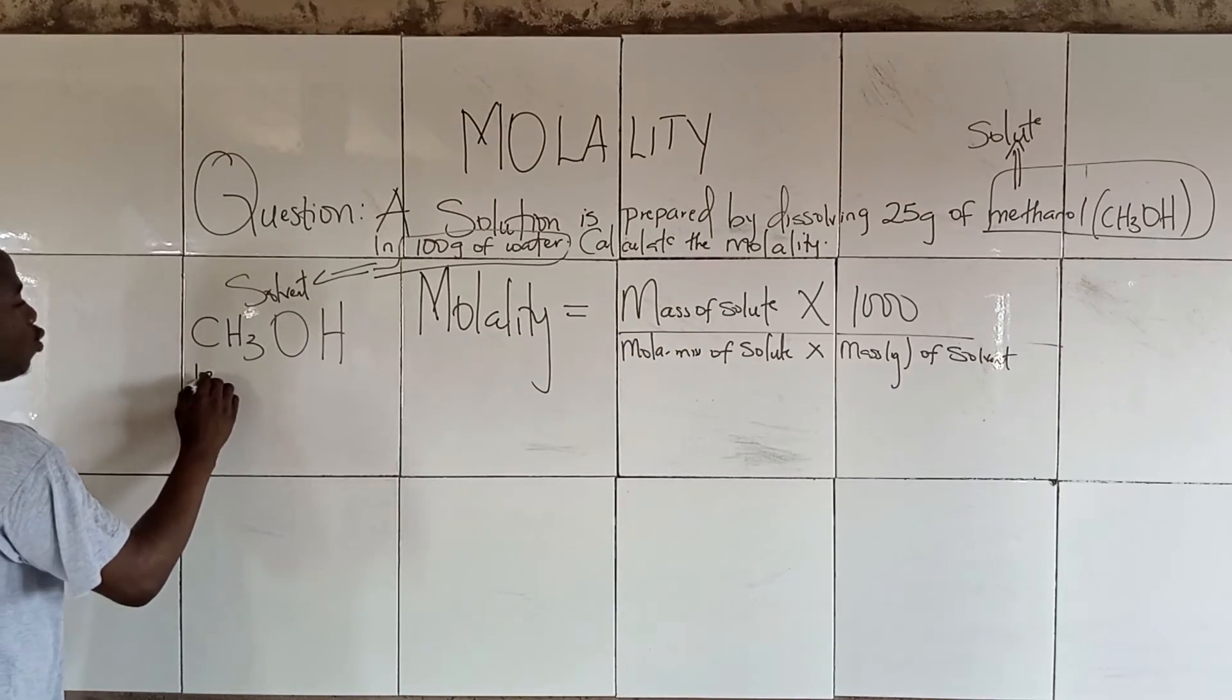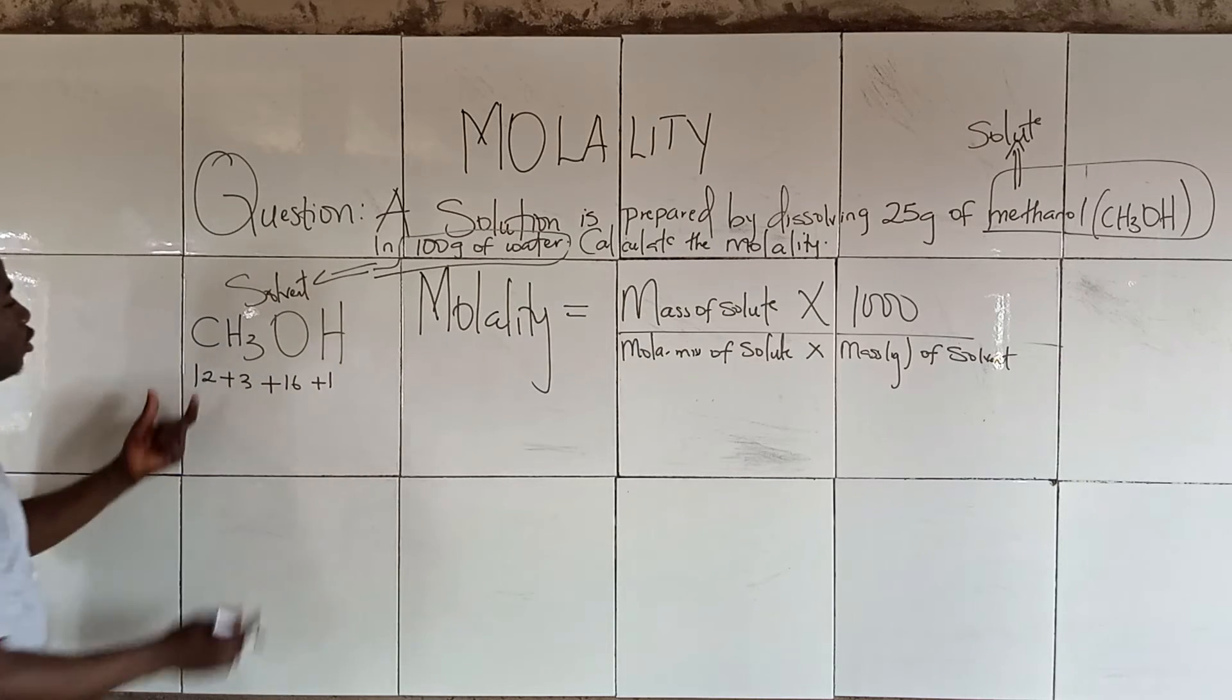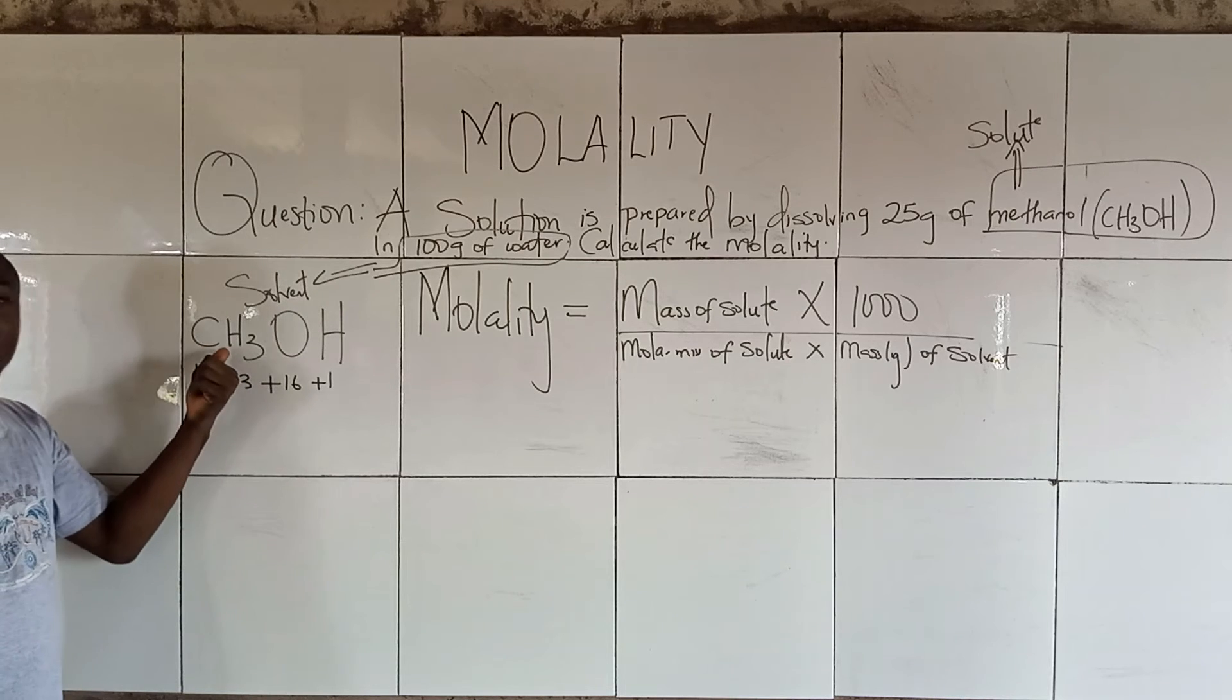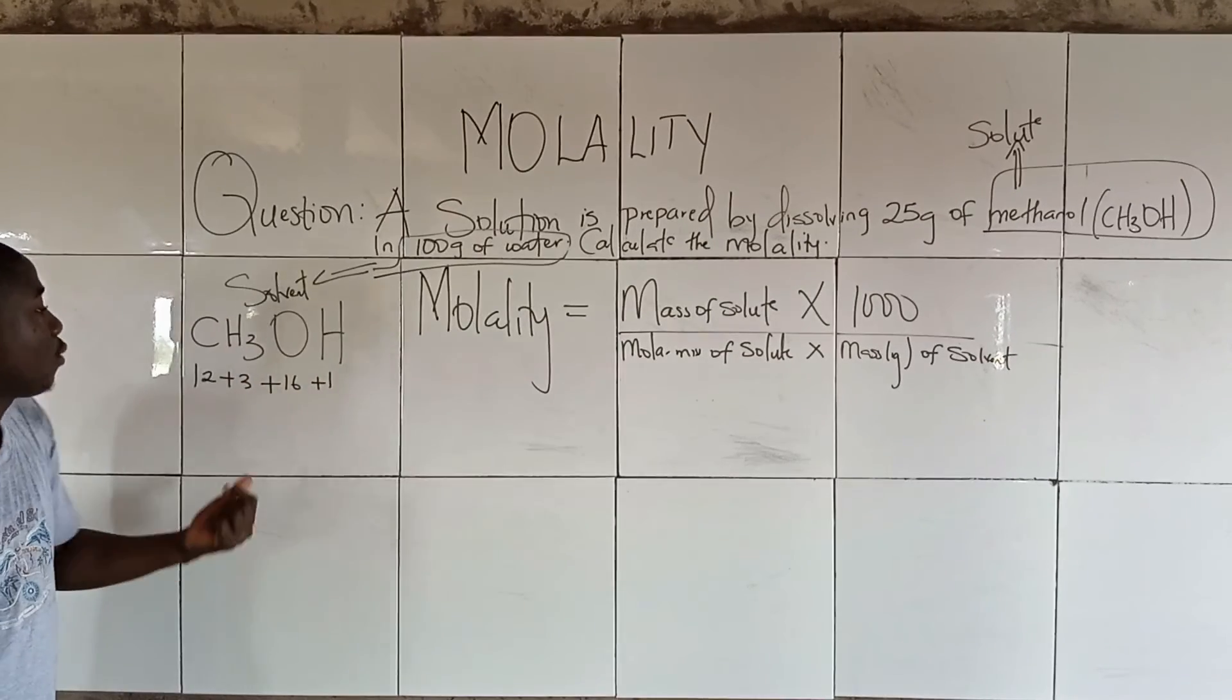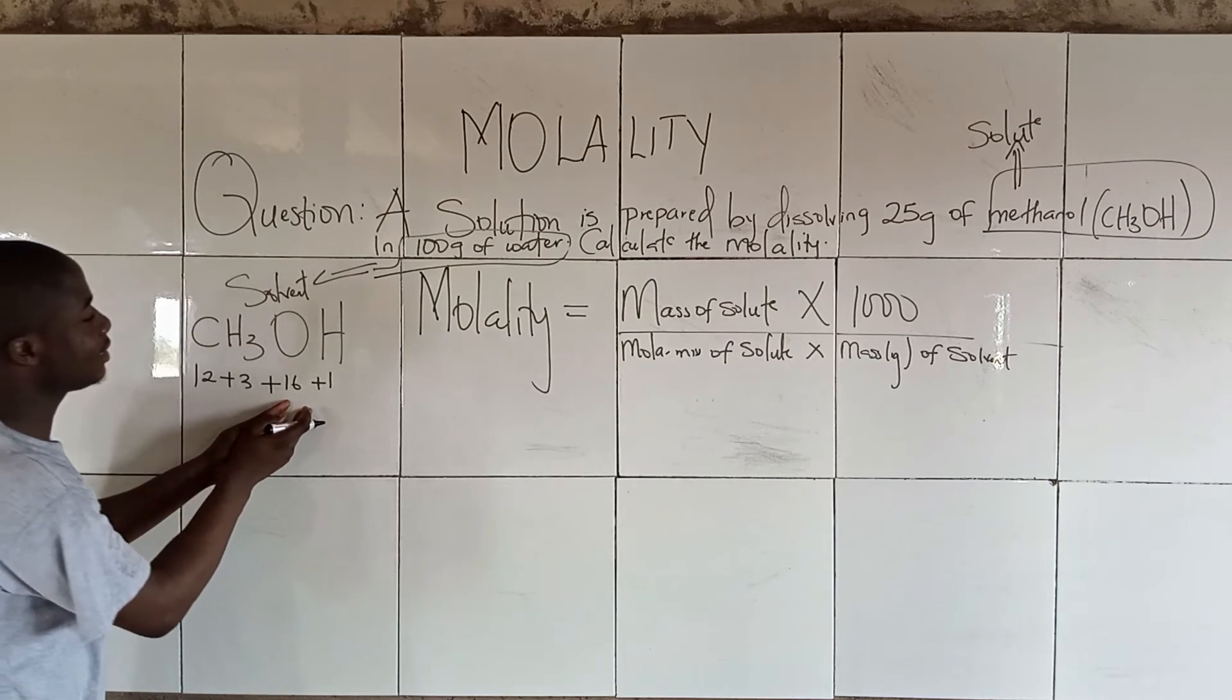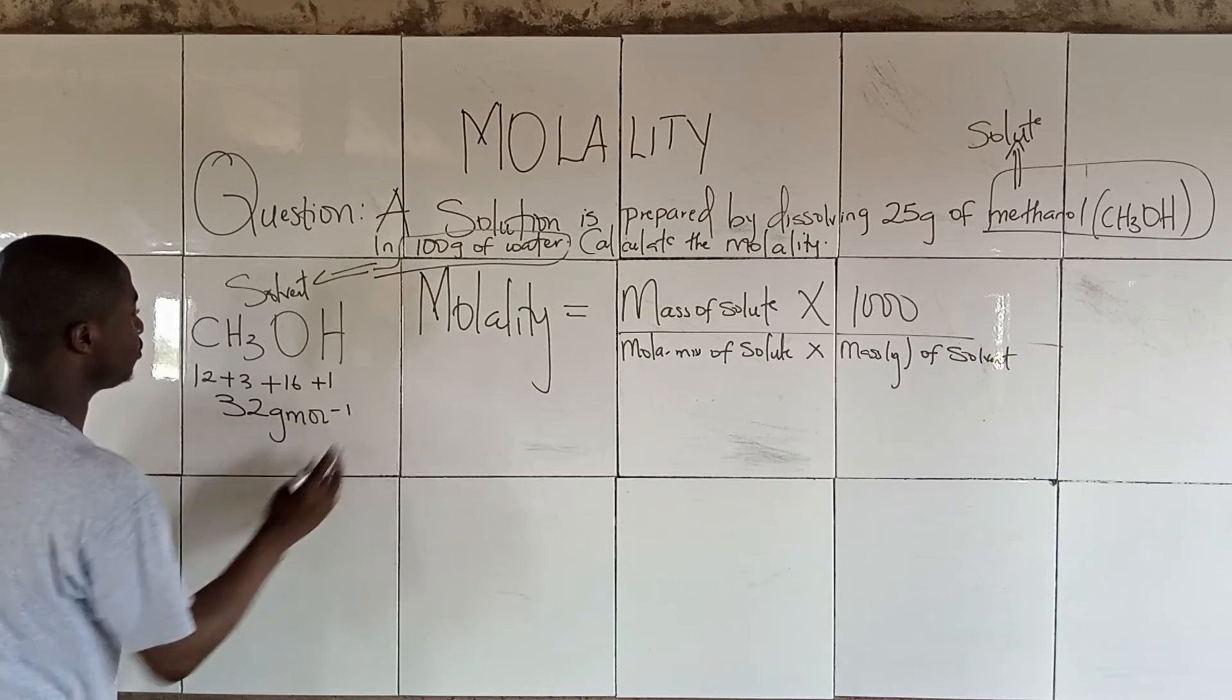It's simply 12 plus 3 plus 16 plus 1, because the atomic mass of carbon here is 12, hydrogen is 3, oxygen is 16 and hydrogen again is 1. So 12 plus 3 that's 15 plus 16 that's 31 and plus 1 that's 32. So it equals 32 grams per mole.